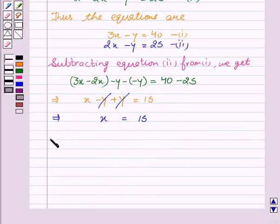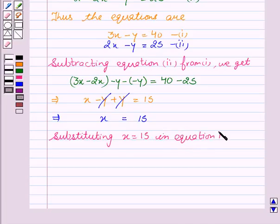On substituting X equal to 15 in equation first, we get our equation first is 3X minus Y equal to 40.